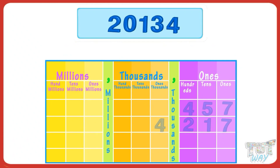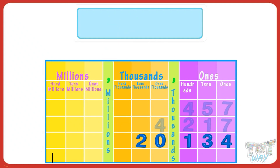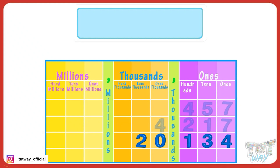Now let's read a five digit number. First write it below the place value chart starting with the ones place: four below ones place, three below tens place, one below hundreds place, zero below thousands place, and two below ten thousands place.